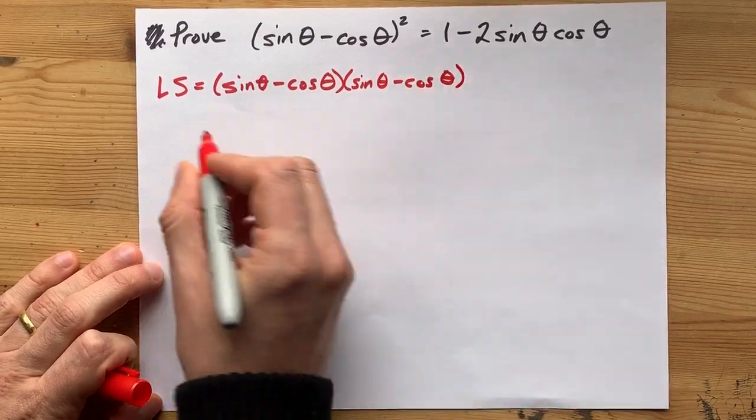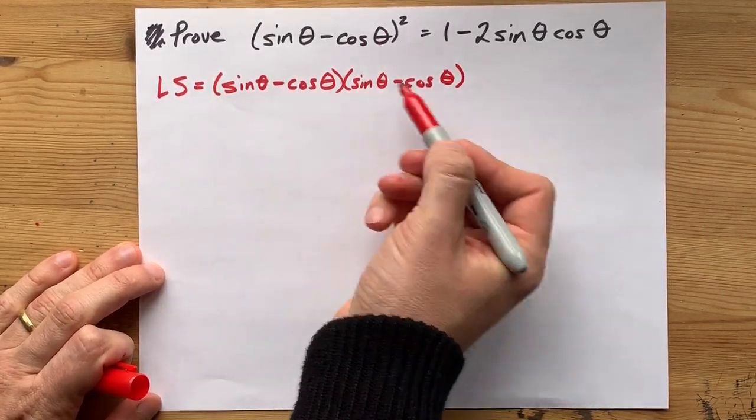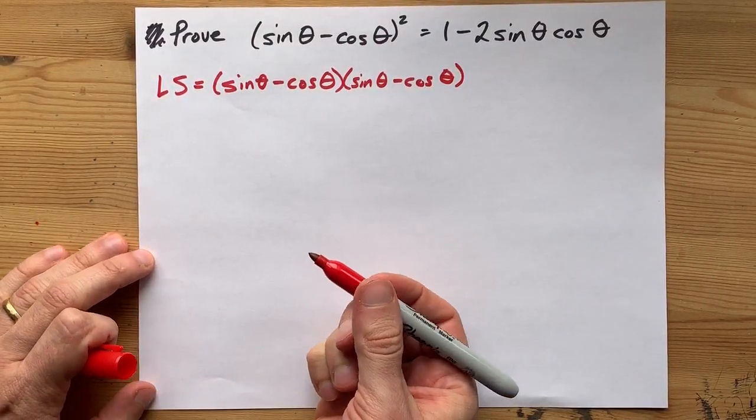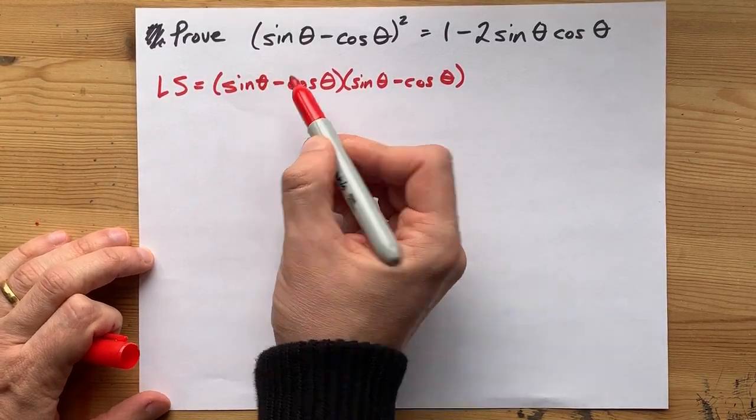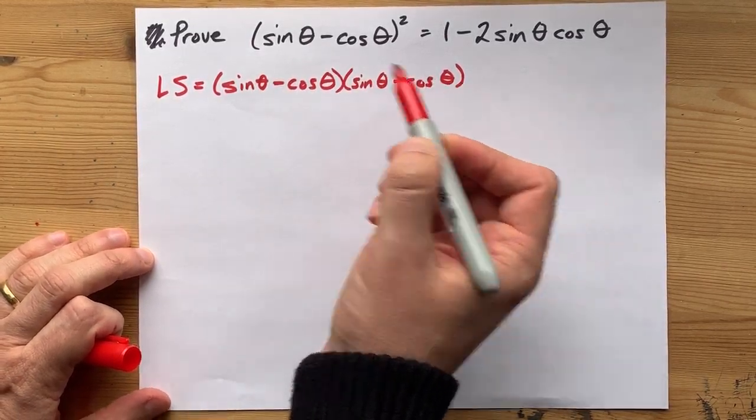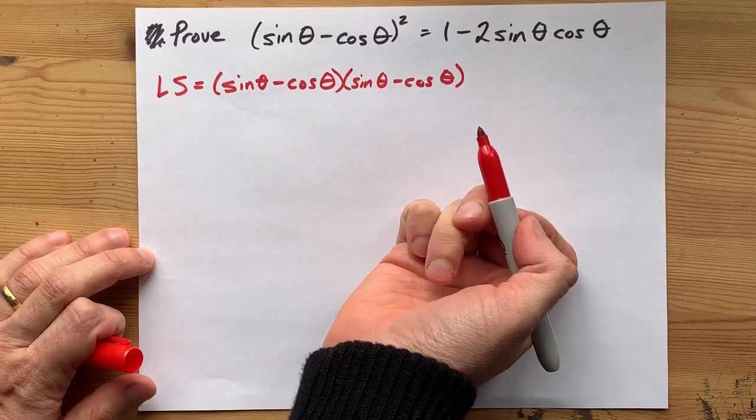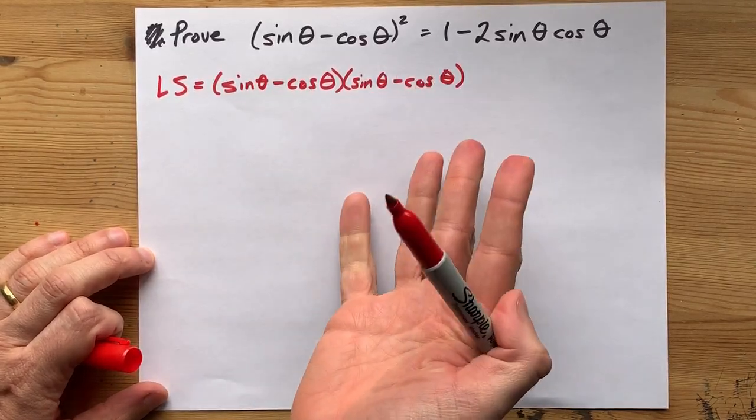So I'm going to rewrite my left hand side expanding the square out. Now this is something minus something times something minus something, that's two things times two things, two times two, that's four.